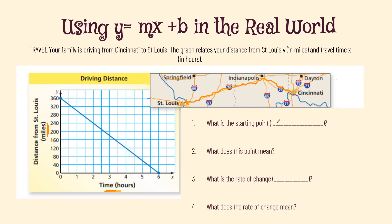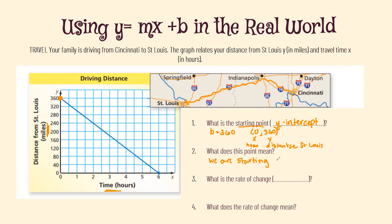The first question: what is the starting point? The starting point is another word for our y-intercept. We can see this clearly crosses at 360, so b equals 360. This is the point (0, 360). The x value of 0 represents hours traveled, and the y value of 360 represents our distance in miles from St. Louis. So our starting point means we are starting 360 miles away from St. Louis — that is the total distance we will have to travel.